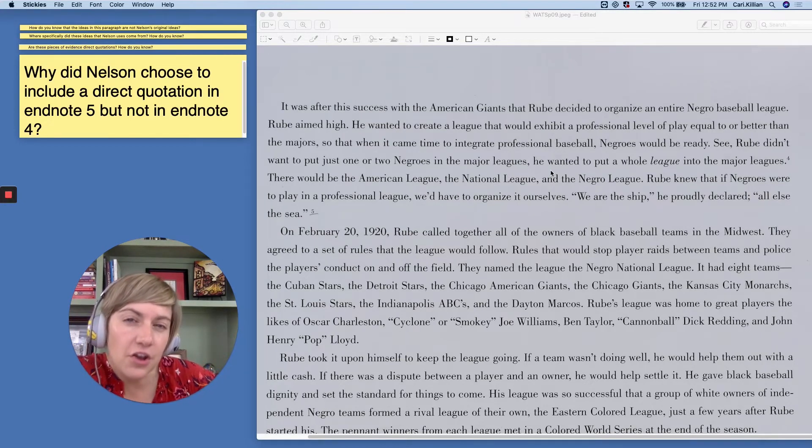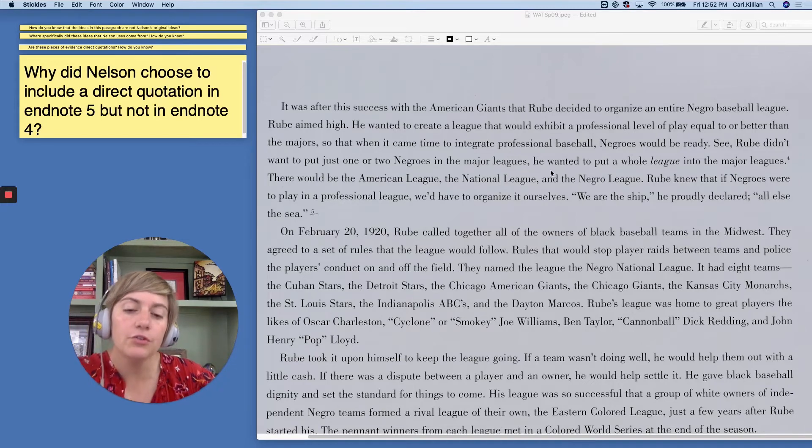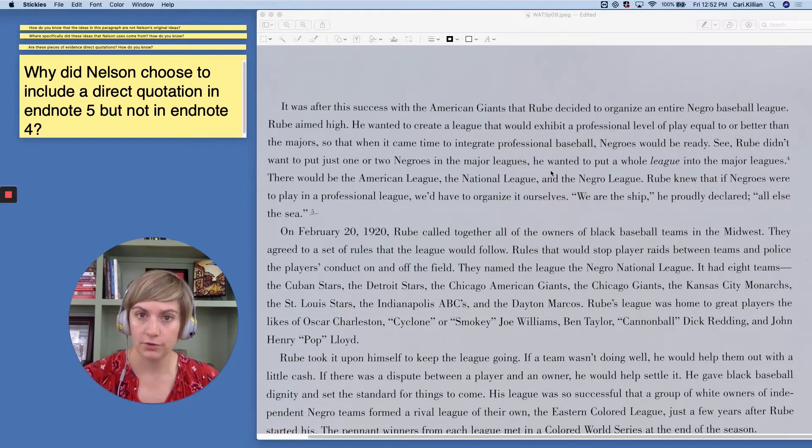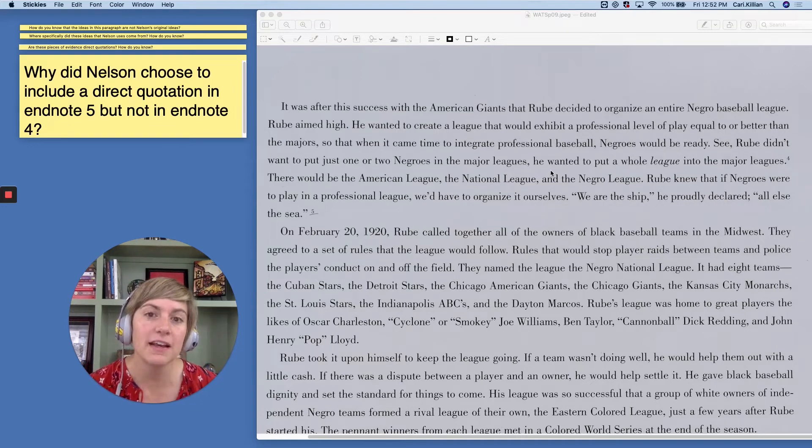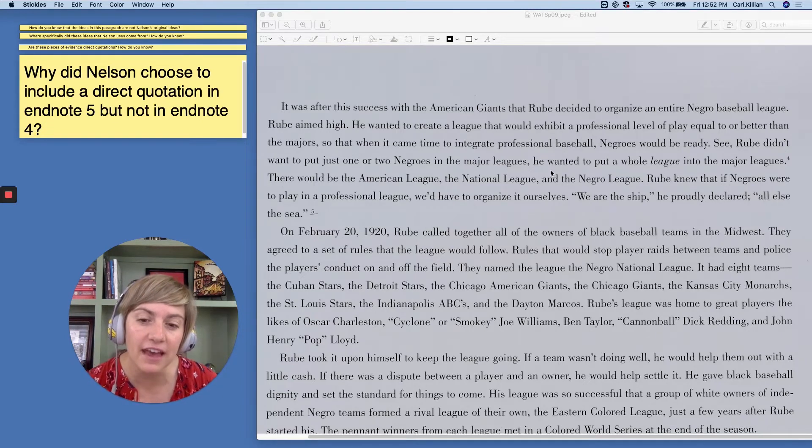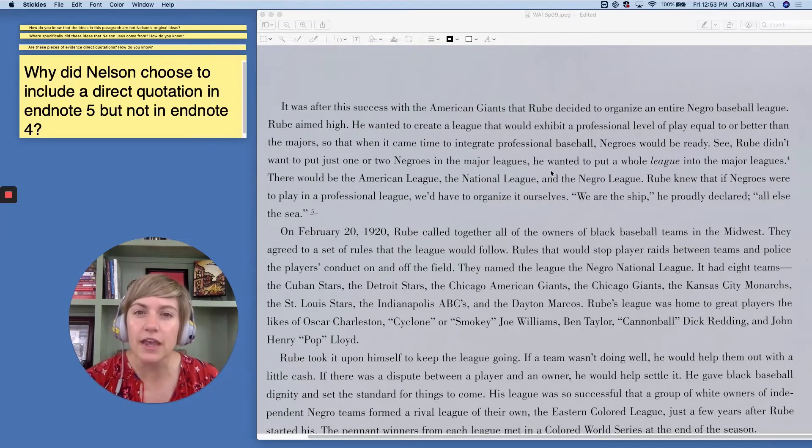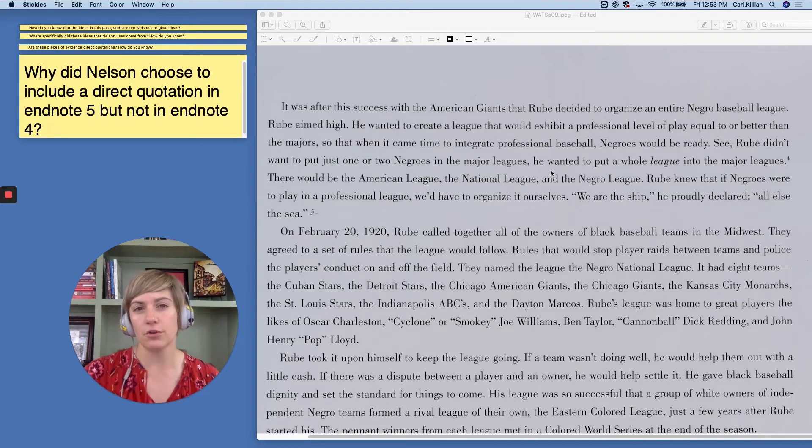Now for our final question on this page. Why did Nelson choose to include a direct quotation in endnote 5, but not in endnote 4? Reread those two pieces of evidence from this first paragraph and think about that question. Pause the screen if you need some more time. In endnote 5, he used the exact words, the quotations. I think he did this because those words are powerful and he wanted to use them just as they were said. For endnote 4, I think he paraphrased the evidence instead of using a direct quotation because he was able to get the same ideas out using his own words.